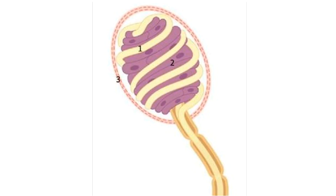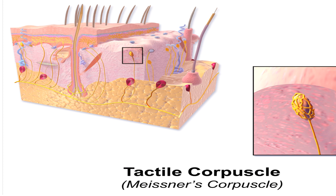A few myelinated nerve fibers enter the deep end of the capsule. Meissner's corpuscles are considerably reduced with age. They are responsible for transmitting sensation of fine discriminative touch and vibration, most sensitive to low frequency vibrations between 10 to 15 Hz. They are rapidly adapting mechanoreceptors, meaning they respond maximally but for a short time — their response decreases if the stimulus is maintained.